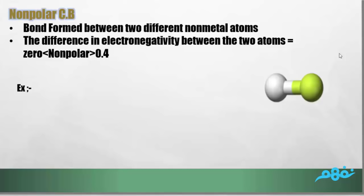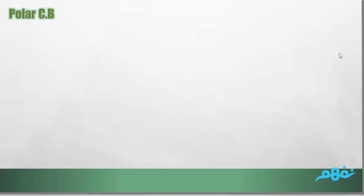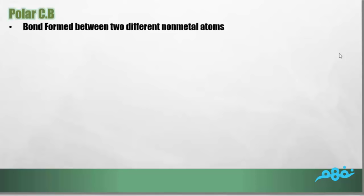For example, the methane molecule: the electronegativity of carbon is 2.5 and the electronegativity of hydrogen is 2.1, so the difference between 2.5 and 2.1 is 0.4. This makes methane a non-polar covalent compound.